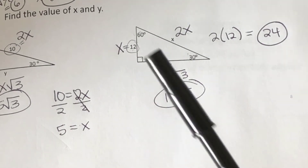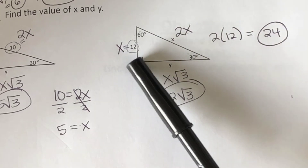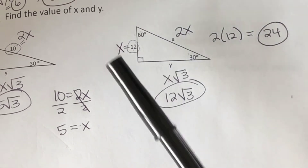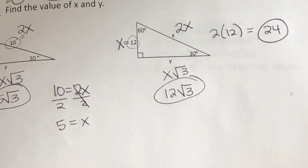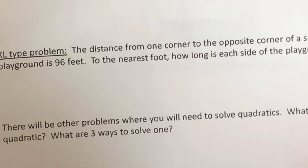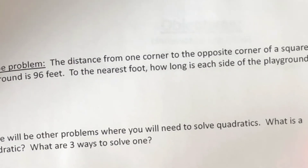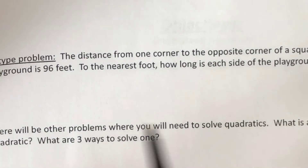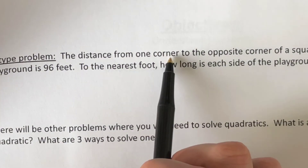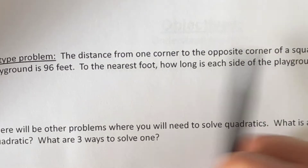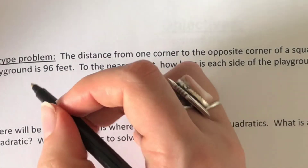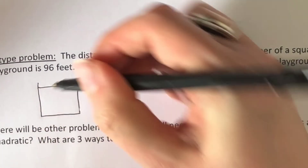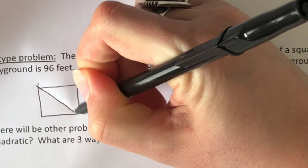Again, these are just shortcuts so you don't have to do the Pythagorean theorem — no a squared plus b squared equals c squared. If you memorize the little formulas, you can just plug them in and find the sides. Let's look at one more problem, similar to the story problems you'll see on Math Excel. This one says: the distance from one corner to the opposite corner of a square playground is 96 feet. To the nearest foot, how long is each side of the playground?